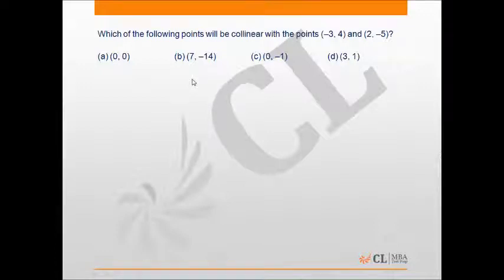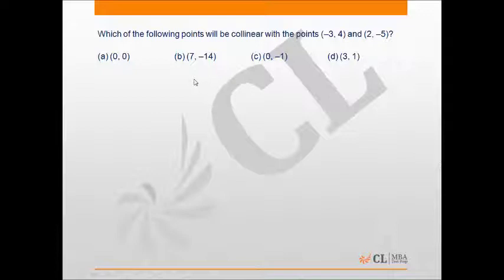Basically, first of all we have to find the slope of the line passing through the given two points, and then we'll take one of these points and a point from among the options and check the slope of the line formed by these points, and see which of the slopes obtained is the same as the slope of the line passing through the given two points.